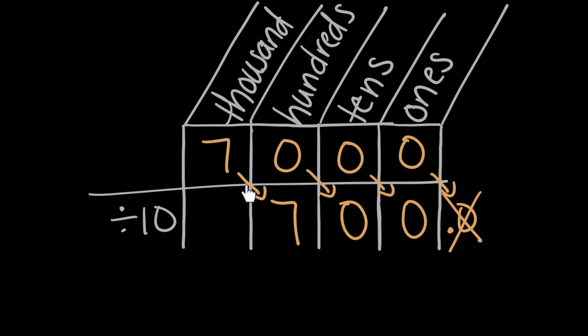So 7,000 divided by 10 was 700. Again, everything moved one place value to the right. So there's two ways to think about dividing by 10. We could either say you drop a zero off the end, or we could say that you move every digit one place value to the right.